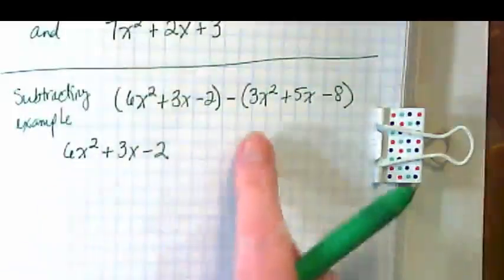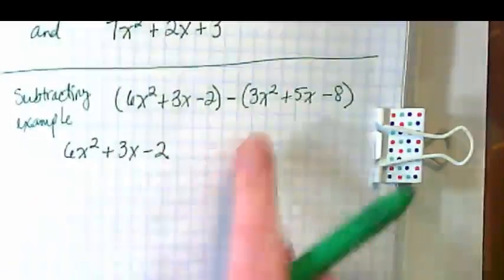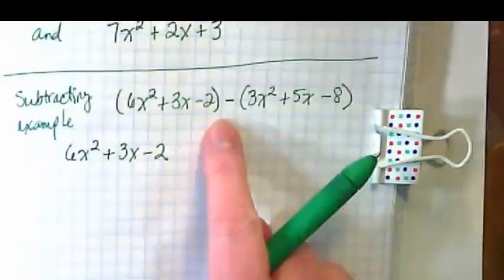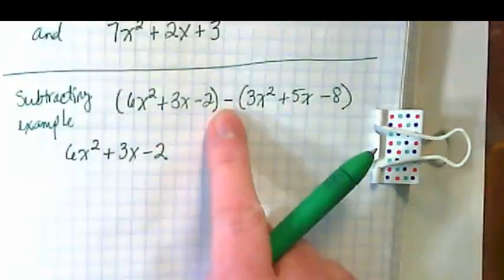But before we take the second polynomial and line it up, we have to deal with the fact that it's subtraction in the middle. What does this subtraction really mean?